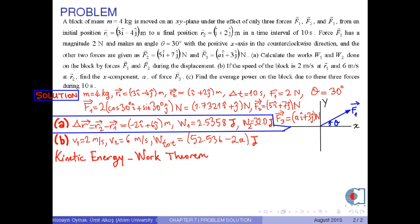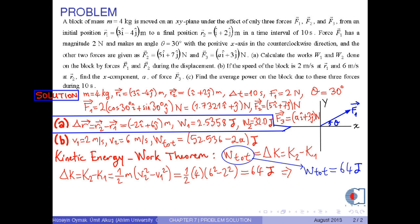Using the kinetic energy work theorem, namely, total work equals delta K, where delta K is the change in the kinetic energy, K2 minus K1, which is equal to 1 over 2 times M times V2 squared minus V1 squared. Since we know these values, then we obtain 64 joules, which is also the total work. Therefore, we write, so A is obtained as approximately negative 5.73 newtons.